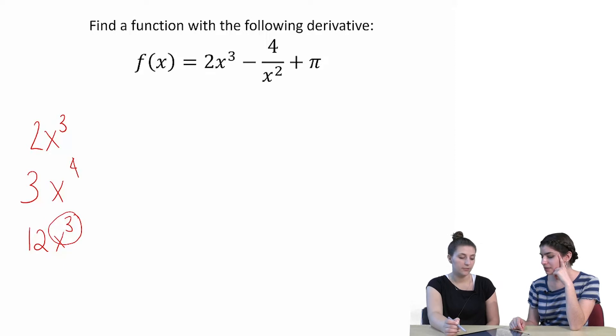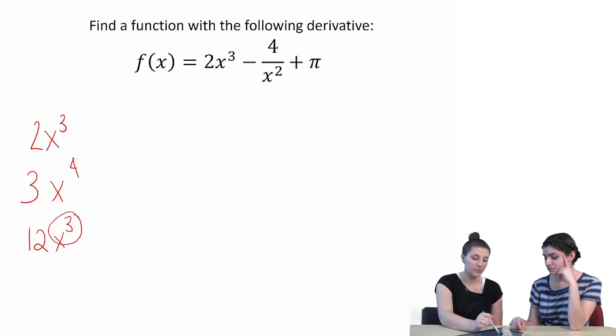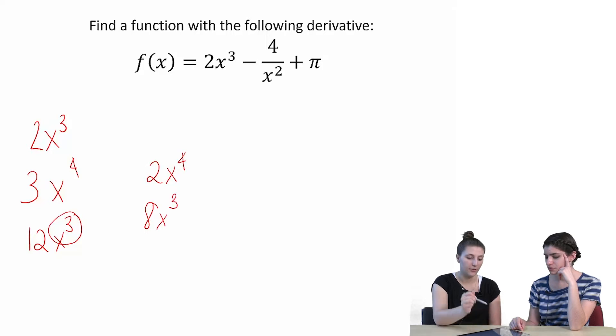So maybe you just ignore the coefficient and add one to the exponent. So if we did 2x to the fourth. Yeah. So just change the exponent and leave the coefficient alone. So we would get 8x to the third when you find the derivative. That's still not right.